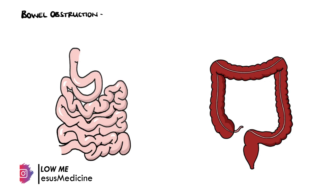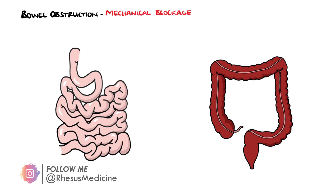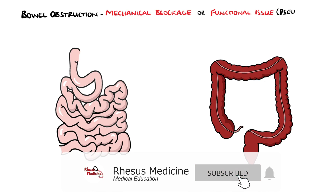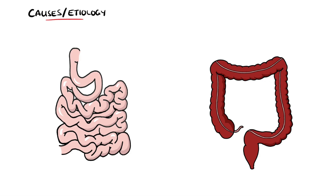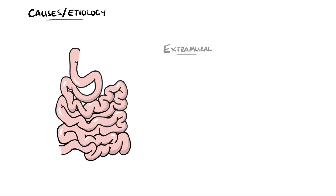Intestinal or bowel obstruction is a condition that comes from either a mechanical blockage of the bowels or a functional issue where the bowels no longer propel digested contents properly through the gastrointestinal tract. Mechanical bowel obstruction can be divided into small bowel or large bowel obstructions, with causes generally divided into extramural, meaning outside the wall of the bowel; mural, meaning within the wall; and intraluminal, meaning inside the bowel lumen.